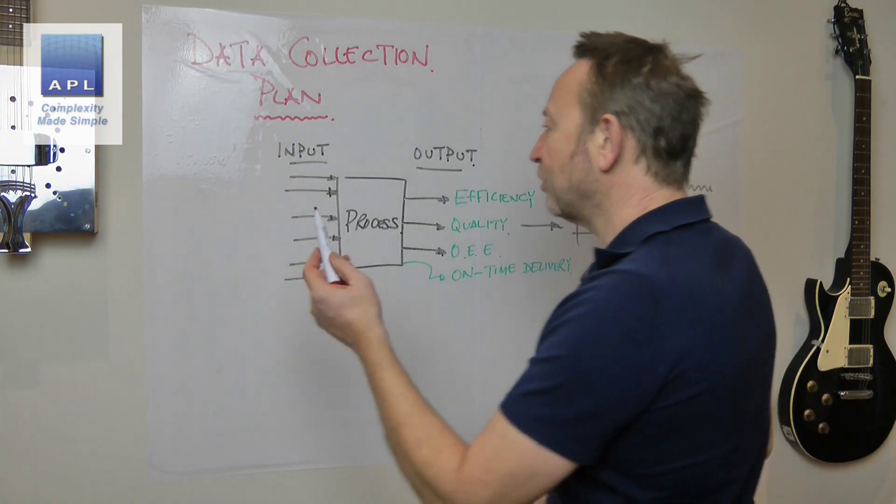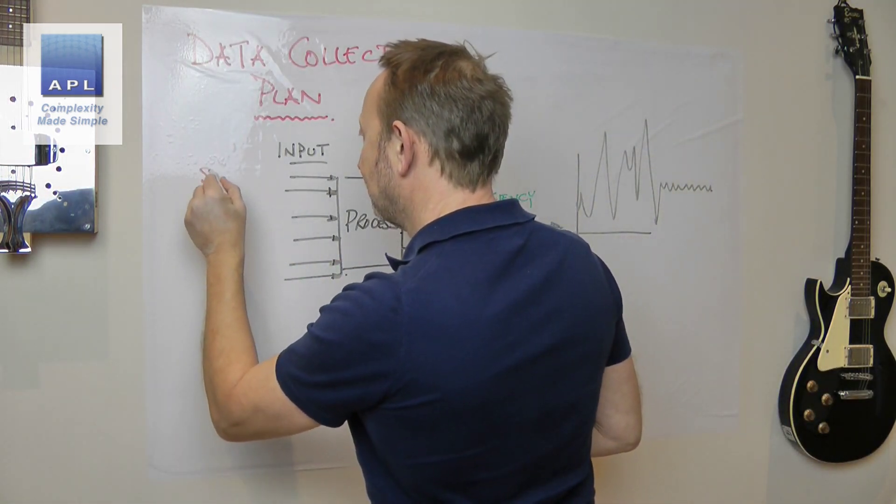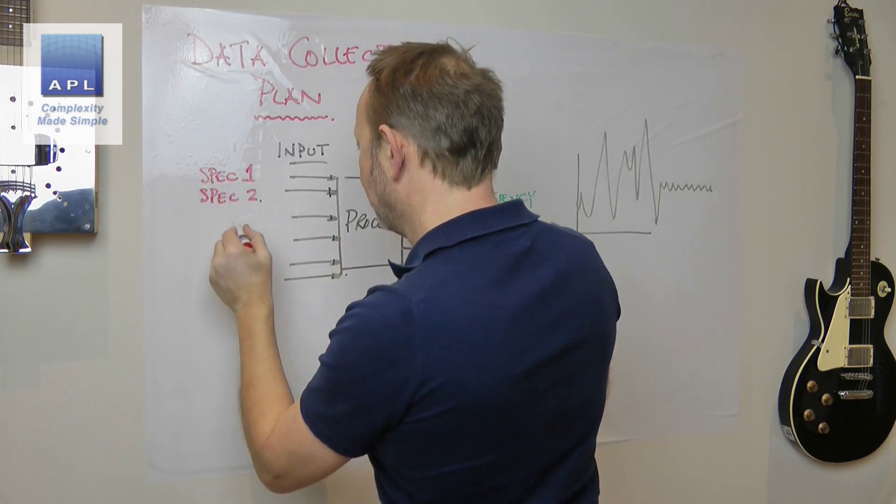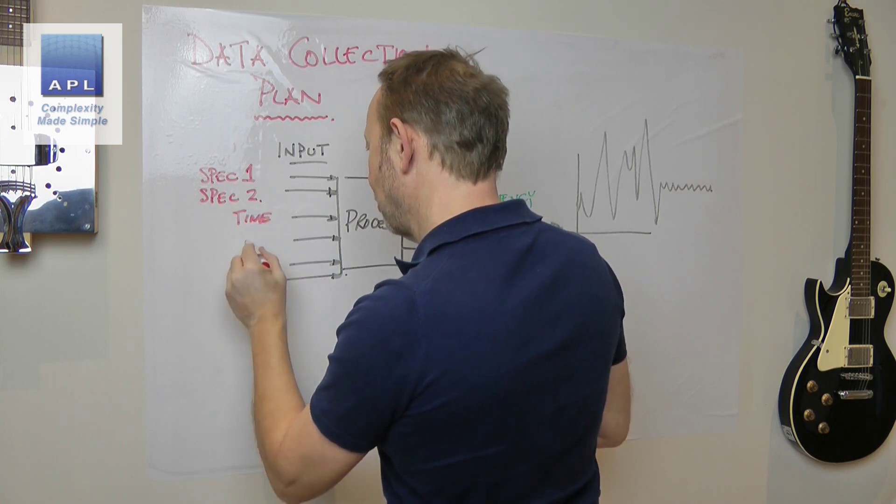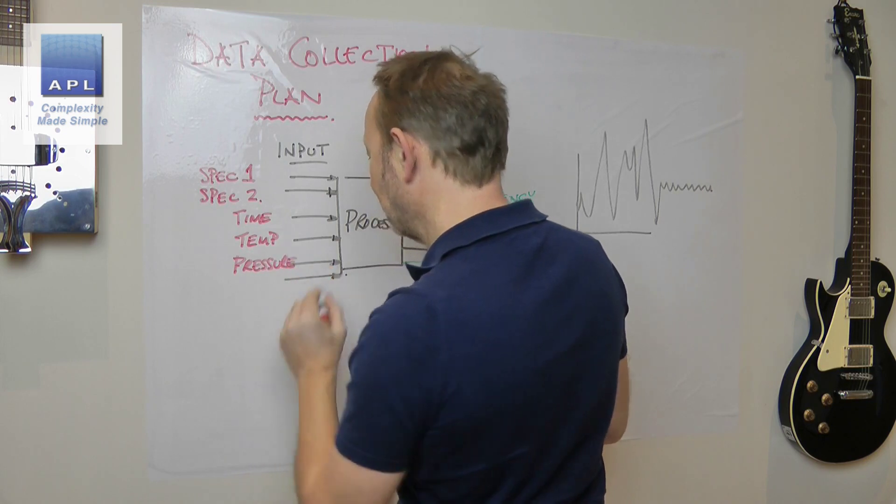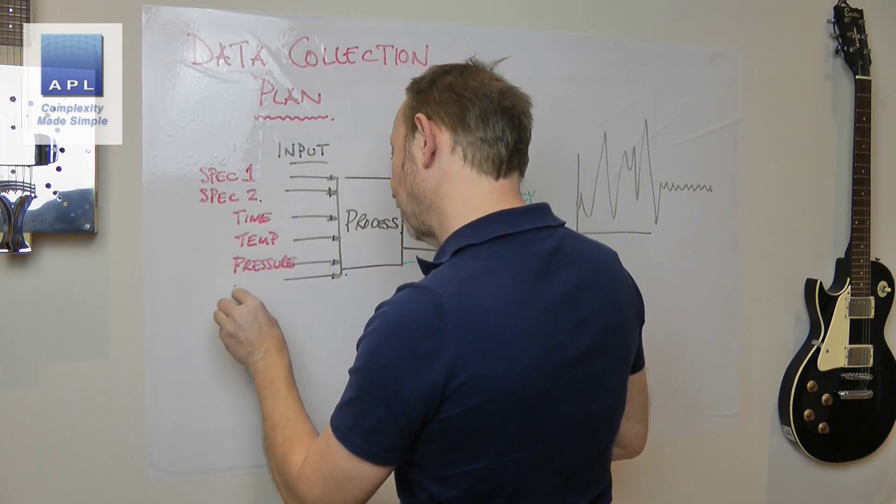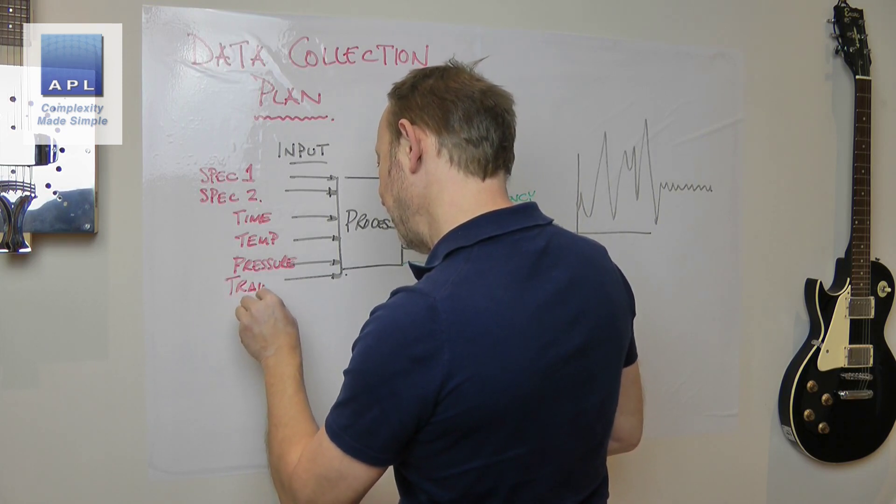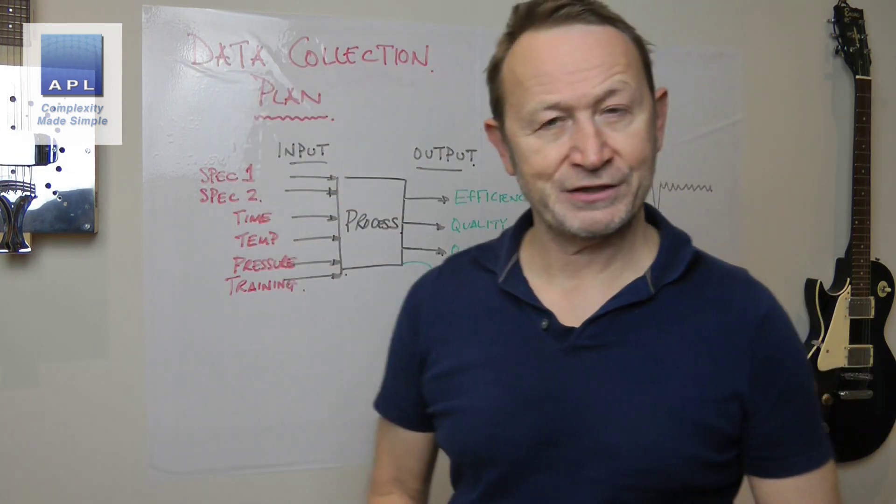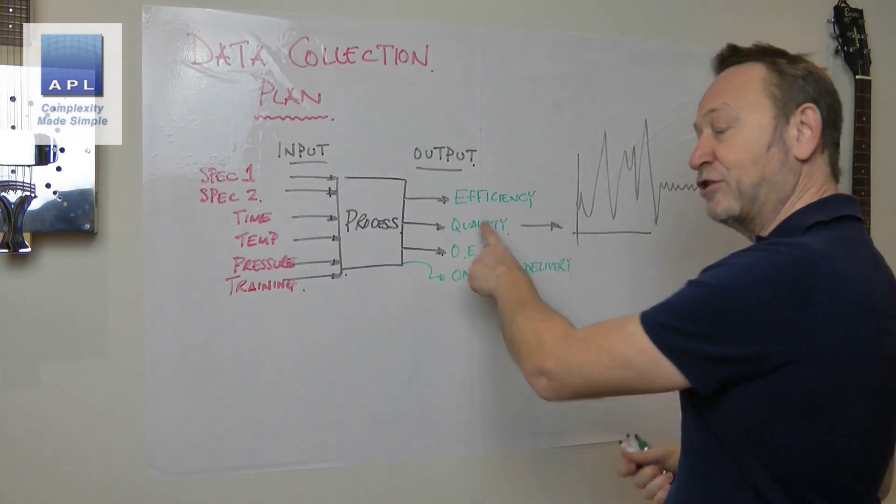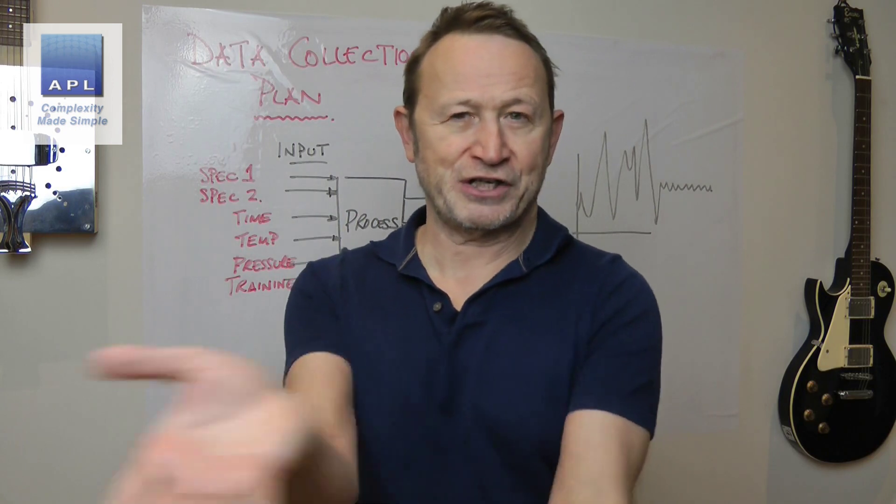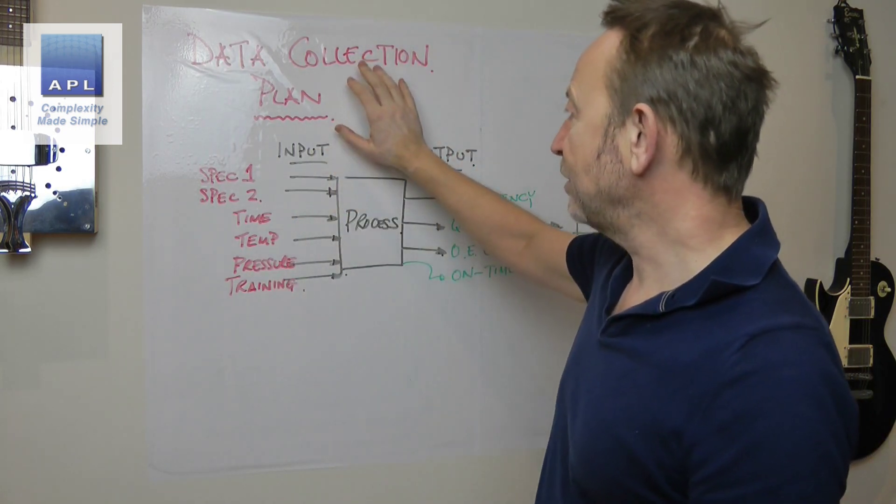Let's say we pick one, then what we're going to do is identify inputs. The inputs could be material coming in - specification one, specification two. It could be settings on the machine - time, temperature, pressure. It could be quality of the people, so maybe whether they're all trained or not. Now obviously this is going to be a longer list but I'm just making a point. A data collection plan - you're going to measure whatever output it is you're trying to transform. I'm guessing you've already got a measurement for it otherwise you wouldn't be turning up with a project to say I've got a problem. But in terms of a data collection plan, well my point would be: what is it that you don't know?